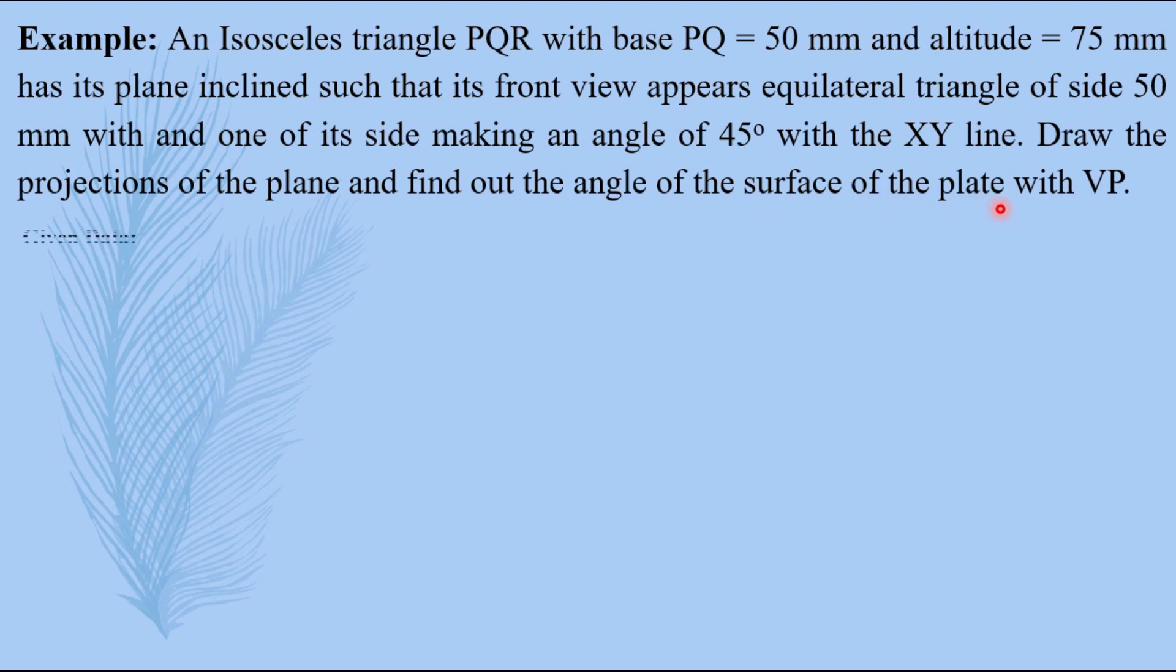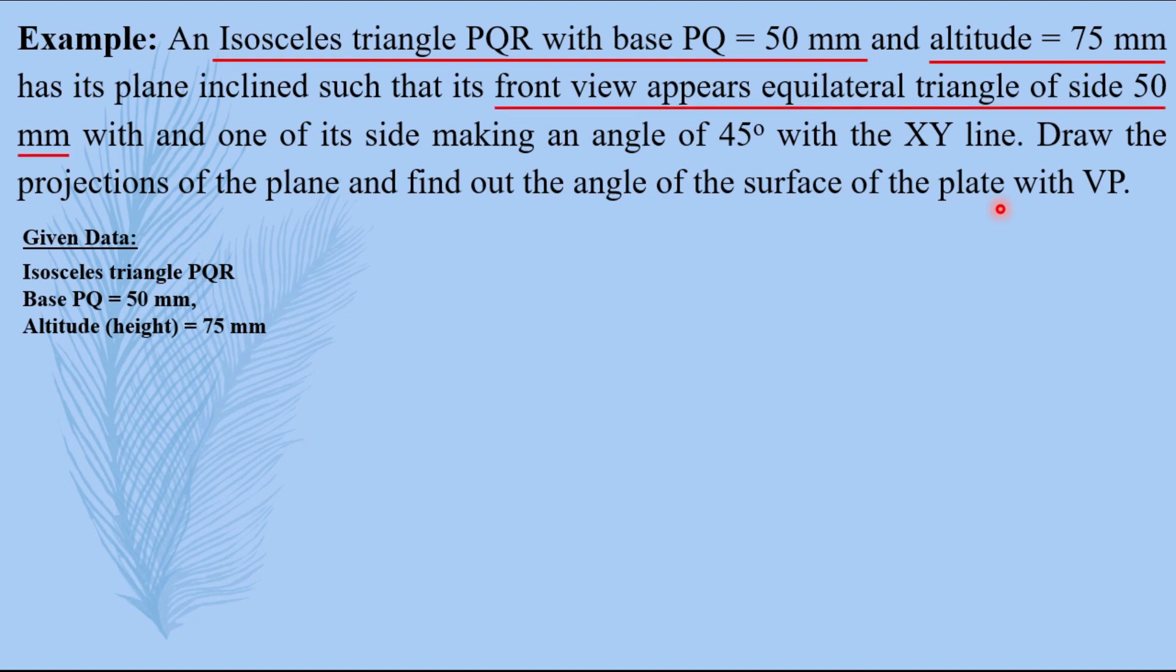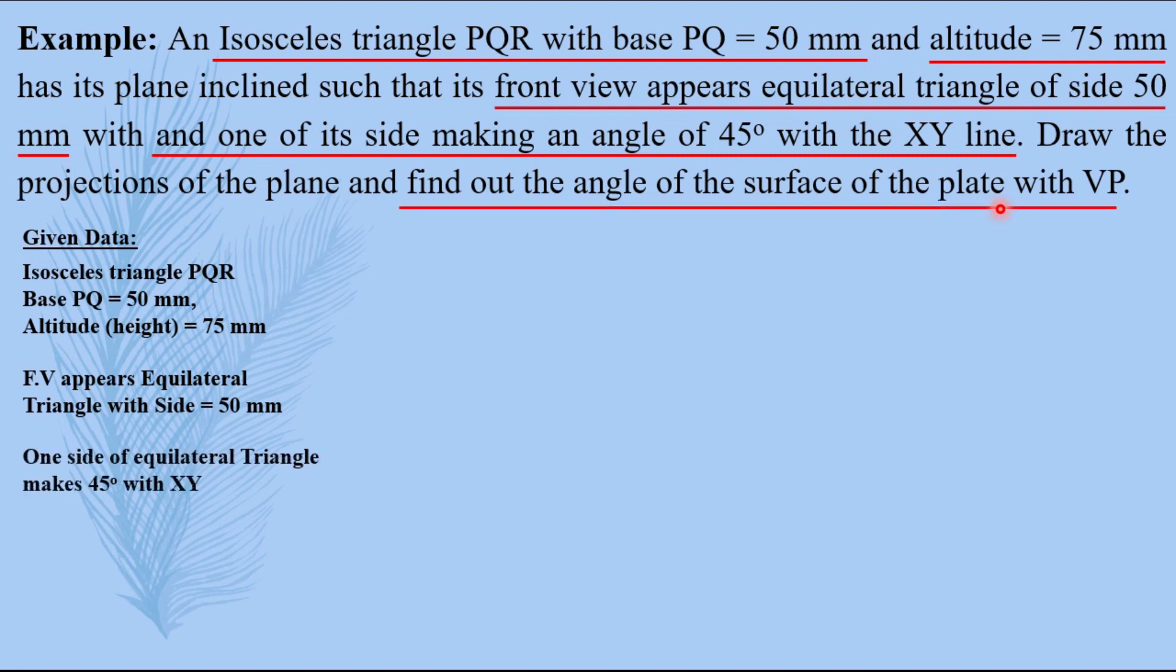Let us write down the given data. First, isosceles triangle PQR base 50 mm altitude 75 mm. Then front view appearing as equilateral triangle of side 50 mm. Then one of the side making an angle of 45 degrees with xy line. And the last, find out the angle of the surface of the plate with VP, so we have to find phi.